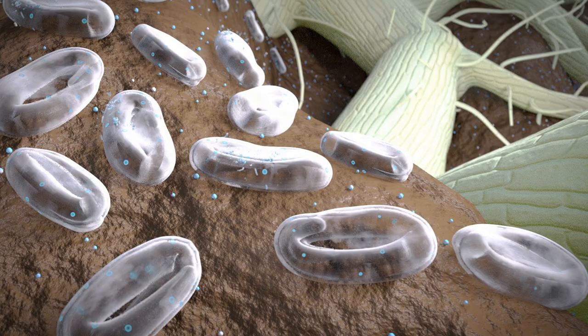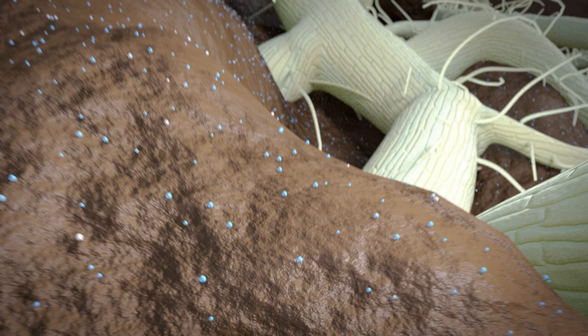Like Fluopuram, BioAct can be directly applied via a drip irrigation system. The fungus starts to parasitize the nematode eggs and prevents the larvae from hatching and infecting new roots.